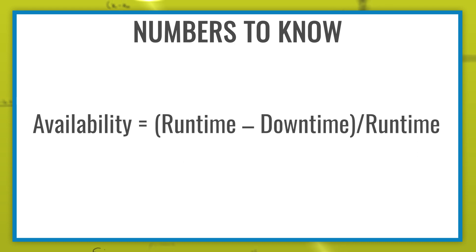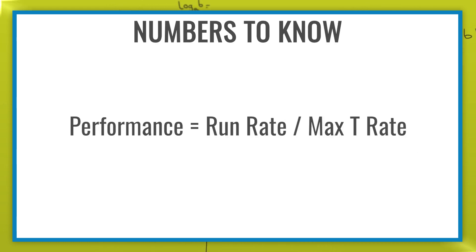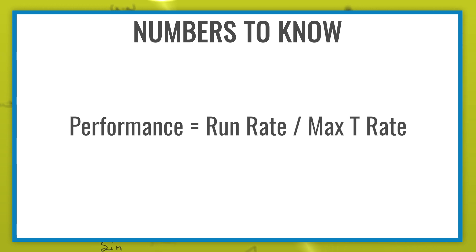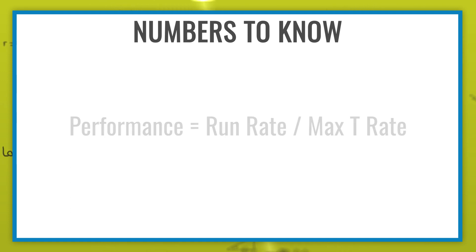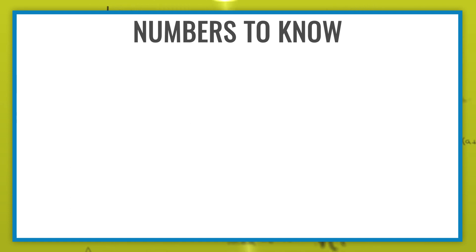To see how efficient a line is running is called performance. To calculate performance, we divide the run rate of the line by the fastest speed possible for that product on the line, called the max key rate.